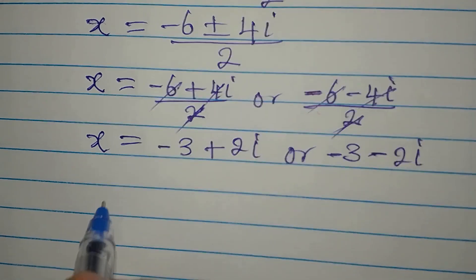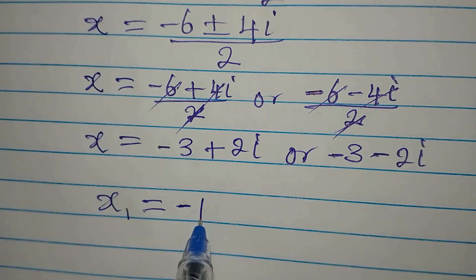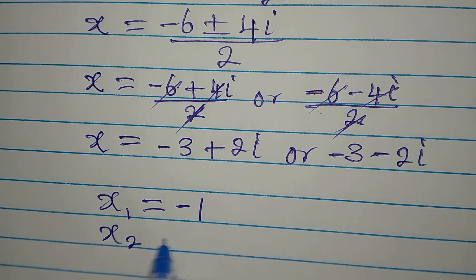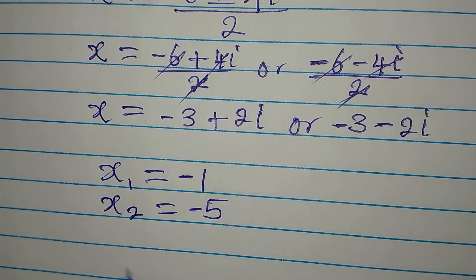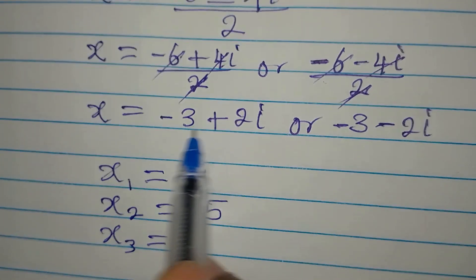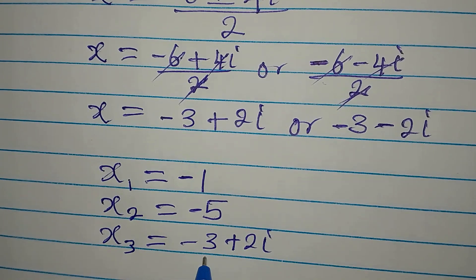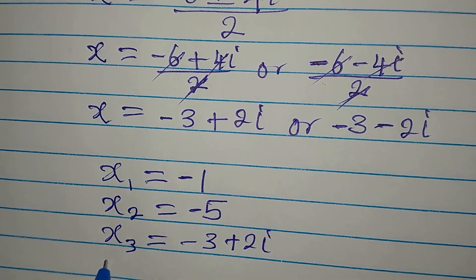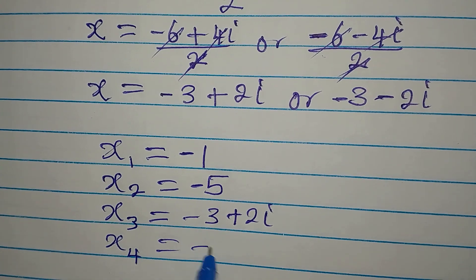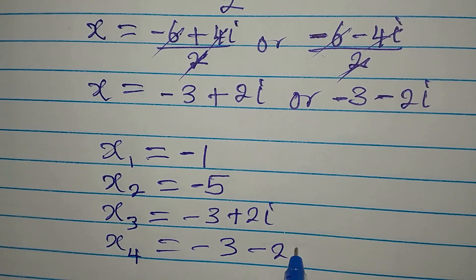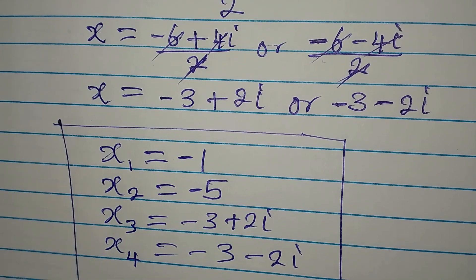Let's bring all four solutions together: x₁ = −1, x₂ = −5, x₃ = −3 + 2i, and x₄ = −3 − 2i. These right here are the four solutions to (x + 3)⁴ = 16.